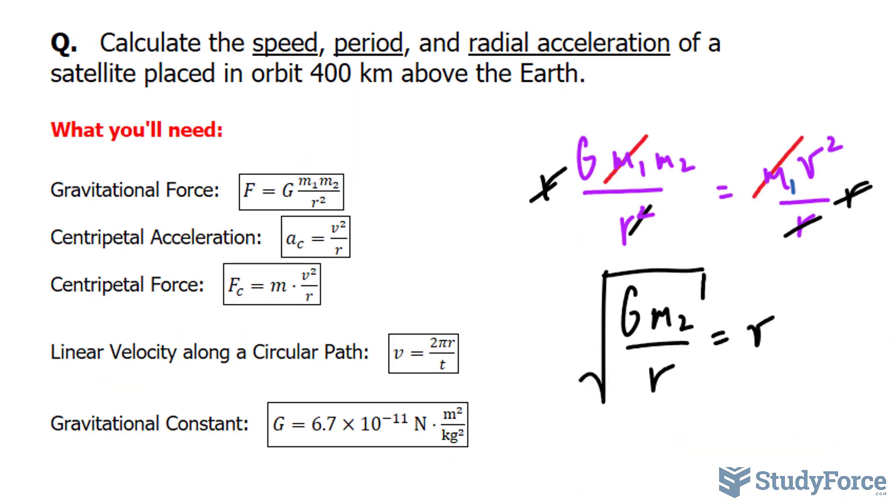If I want to find the speed of this satellite orbiting the Earth, m₂ represents Earth's mass, and that's 6.0 × 10²⁴ kilograms. I'll substitute that value in. I'll substitute the gravitational constant in for G, and for r is the orbit that's 400 kilometers, but of course you need to represent that in meters. You also have to include the radius of the Earth.